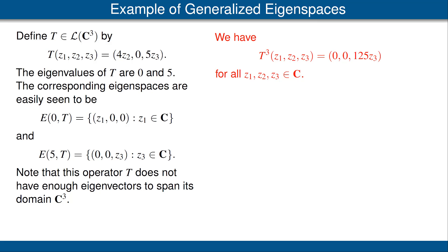Let's start with the eigenvalue 0 and find the corresponding generalized eigenspace. That means we look at t minus 0i, which is just t, and by our previous result we only have to raise it to the power of the dimension of the space — in this case 3, because we are working in C³. In other words, we need to find the null space of t cubed. It's easy to compute that t cubed is given by the formula shown here. The generalized eigenspace corresponding to 0 is the null space of t cubed, and from that formula we see that the null space is the set of vectors whose third coordinate z₃ is 0, which is the subspace displayed here.